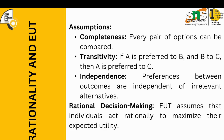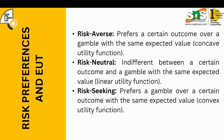EUT assumes that individuals act rationally to maximize their expected utility. Regarding risk preference, EUT categorizes risk-taking behavior into three types: risk averse, risk neutral, and risk seeking.